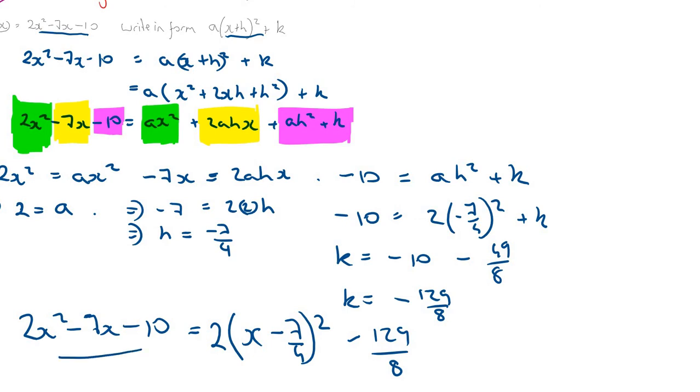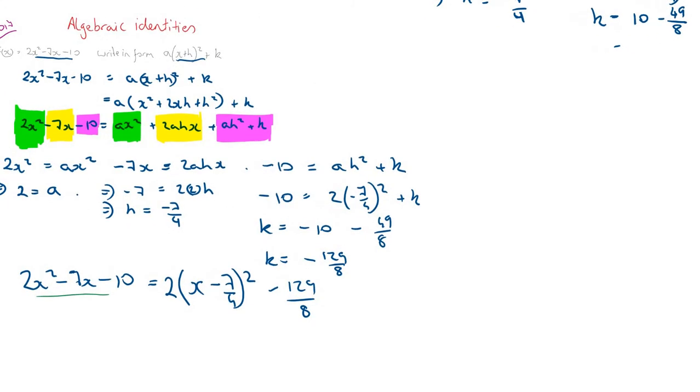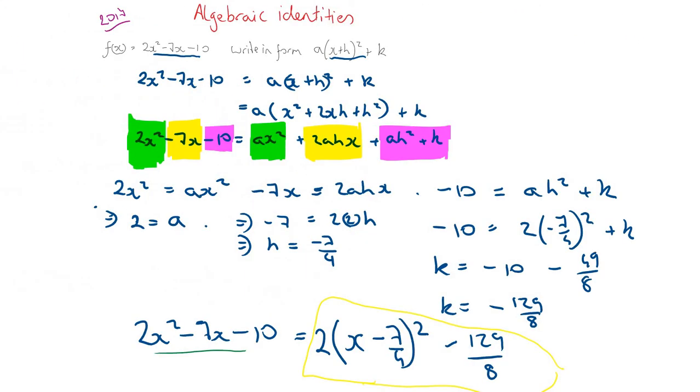So just to recap, when using algebraic identities the key thing to do is expand out the brackets and equate like terms. And if you equate the coefficients of like terms then you're able to solve the problem. In this case we were able to rearrange the function 2x squared minus 7x minus 10 into its completed square form without having to do completing the square.